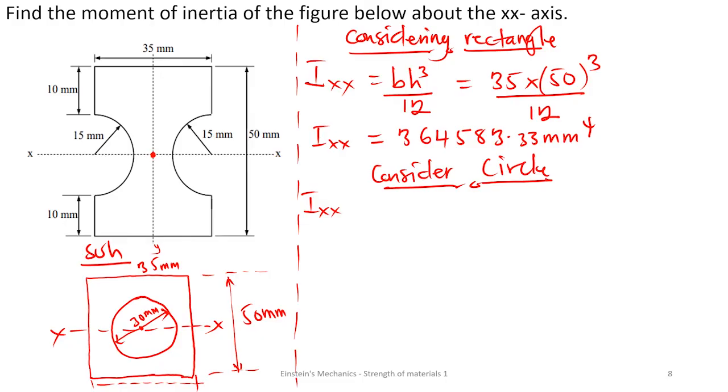And that is going to be equal to pi times the diameter of this circle, which is 30 to the power 4 over 64. And this is going to give us a value of 39760.78 mm to the power 4.